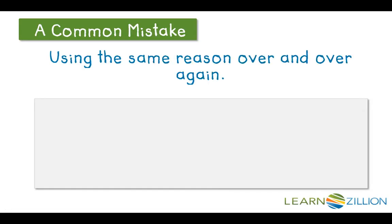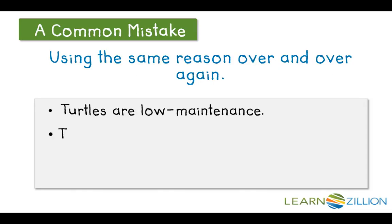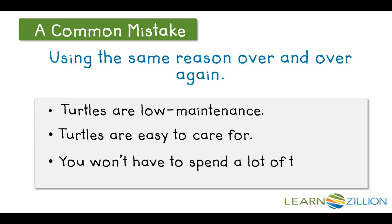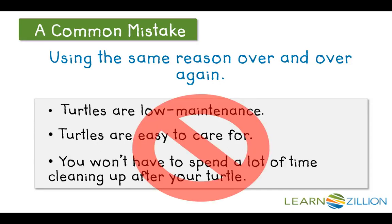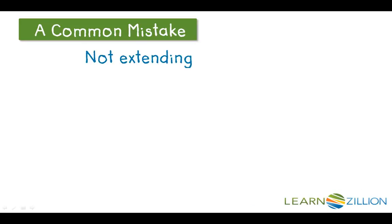Sometimes writers give reasons that are really saying the same thing over and over again in a different way. Let's look at this example: turtles are low maintenance; turtles are easy to care for; you won't have to spend a lot of time cleaning up after your turtle. All three of these are basically saying the same thing. You're going to have a stronger argument if you can say three separate reasons, and you're going to give your reader more to think about.